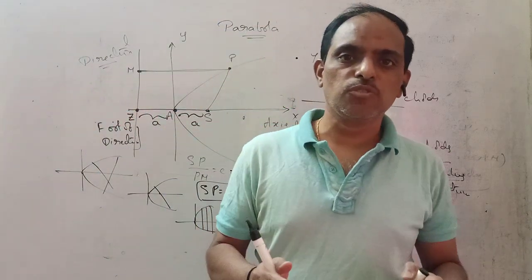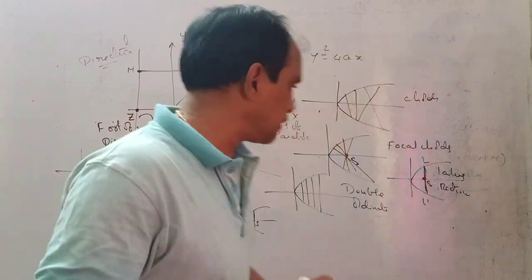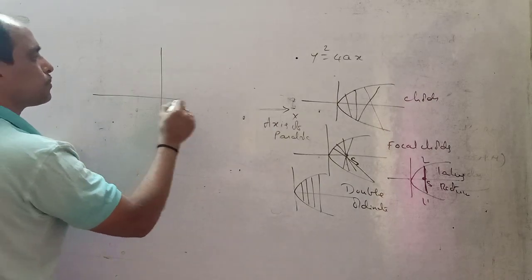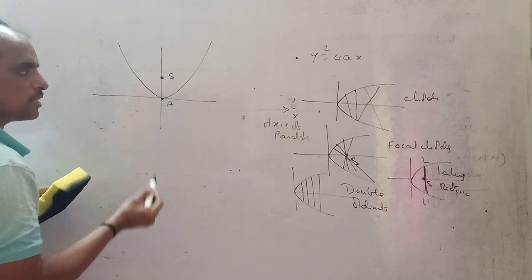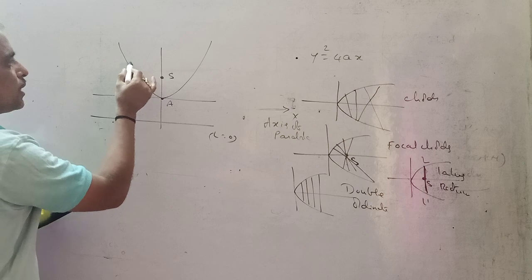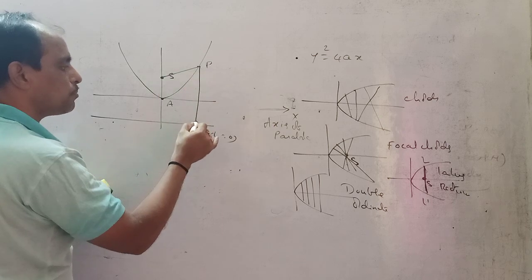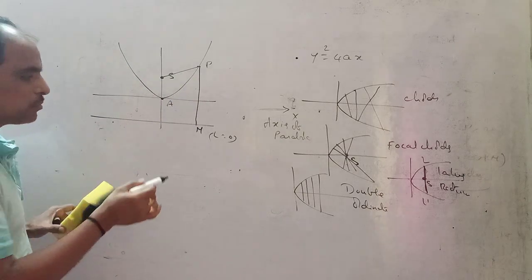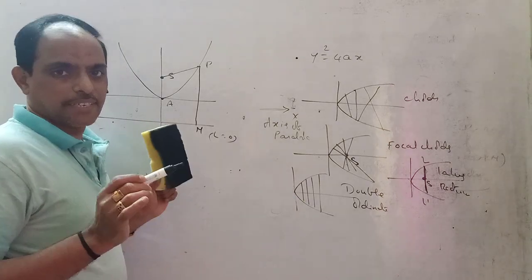From the standard form of parabola, we can also take the parabola in another orientation. Here is the parabola with vertex A, focus, and directrix L = 0. Suppose here is a variable point P anywhere on the parabola — SP by PM applies here too. Z is called the foot of the directrix for this parabola.